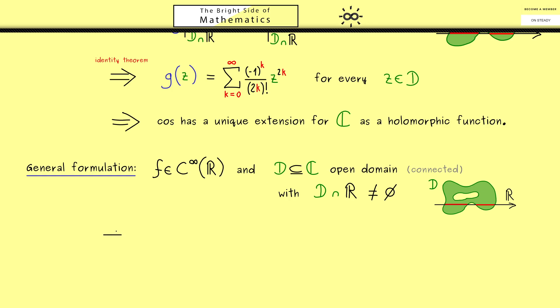And now we can write down the same conclusion as before for the cosine function. More precisely, it means there is at most one holomorphic function we can call g again, and g should be defined on the open domain D.